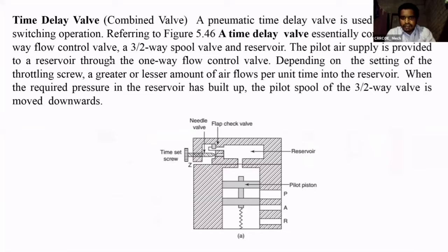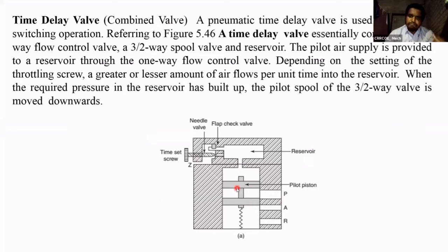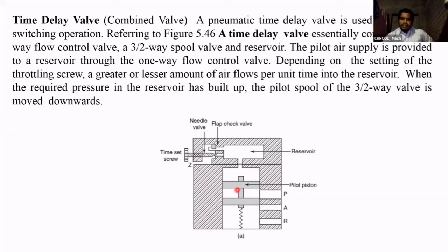Next is the time delay valve. In the time delay valve construction, we have three ports: pressure port, output port, and return port, and we have a spool here — a pilot spool. The closing and opening of the port is done with the help of this spool/slider. Above the spool we have a chamber. We send pilot air — external auxiliary air — that operates the slider. Pilot air is the air which operates the valve. The flow of pilot air is controlled with the help of a set screw.